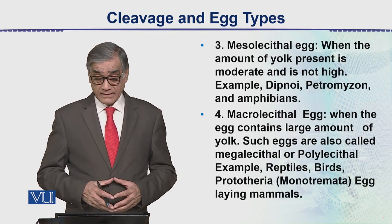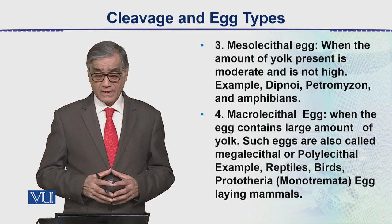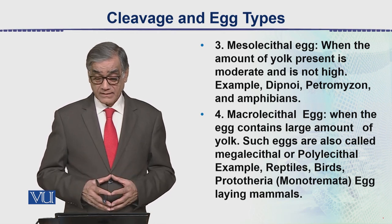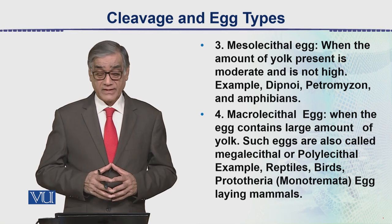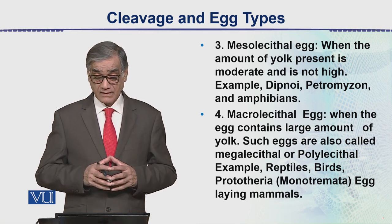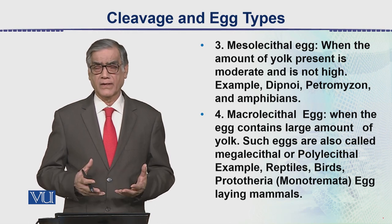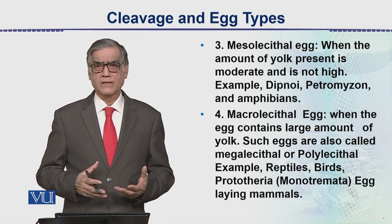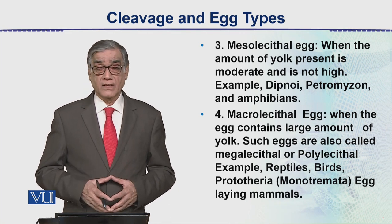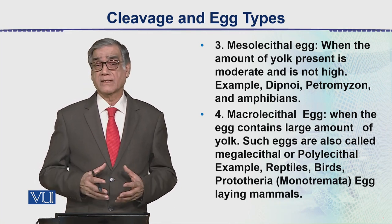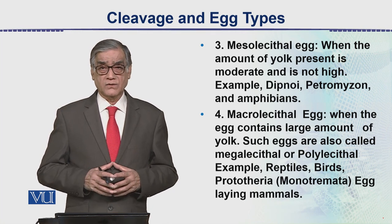Then there is mesolecithal — where a little amount of yolk is present, in moderate quantity, and it is not enough. Examples of this are dipnoi — which we also call lungfish — or petromyzon.